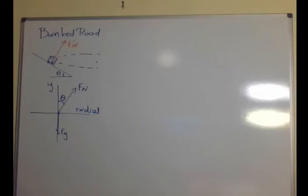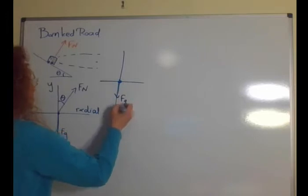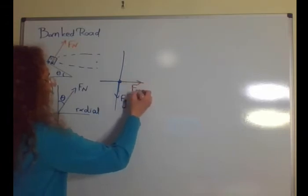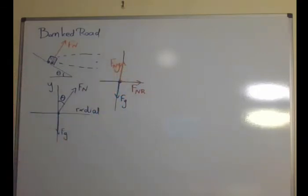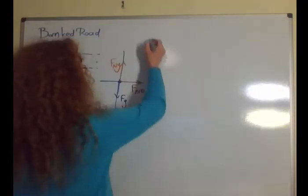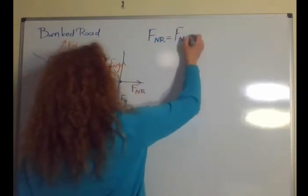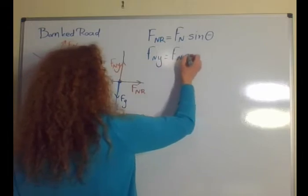Again, we will resolve the normal force into the two components, meaning that we will still have the force due to gravity. We will have the radial component of the normal force and the vertical component. So the cosine now goes on the y-axis, just because we know the angle with the y-axis. The r component will be the normal force times the sine, while the y component will be the normal force times the cosine.